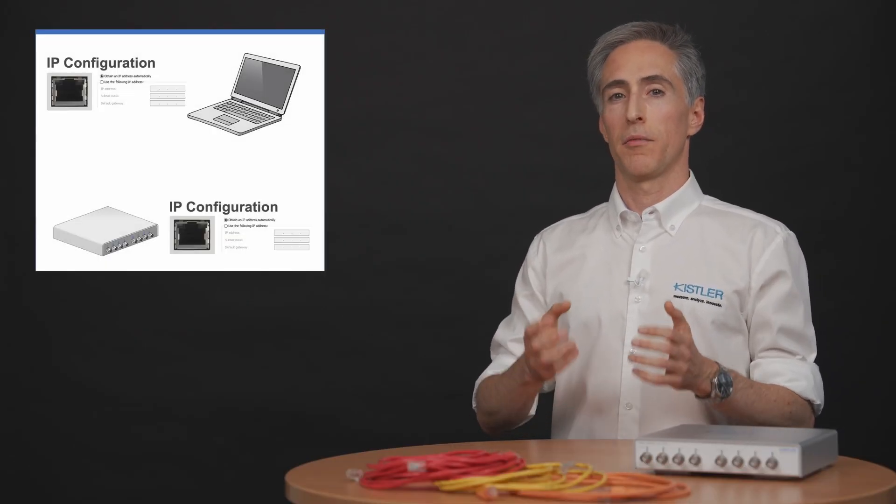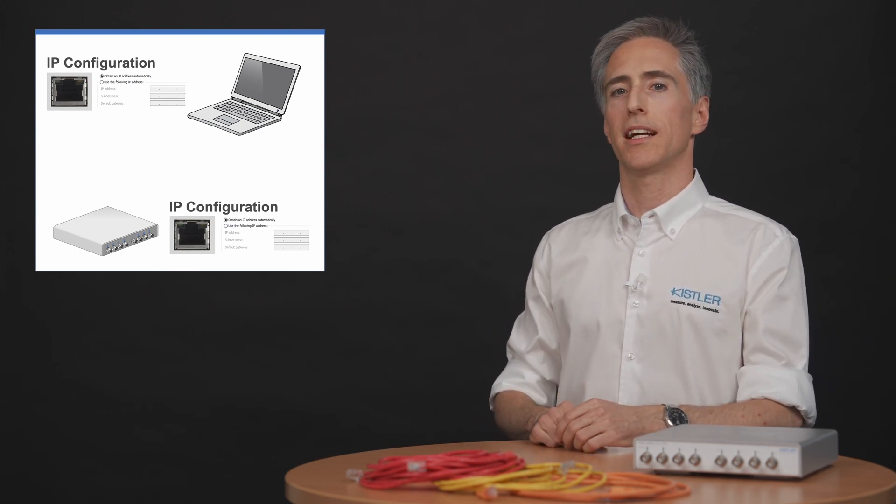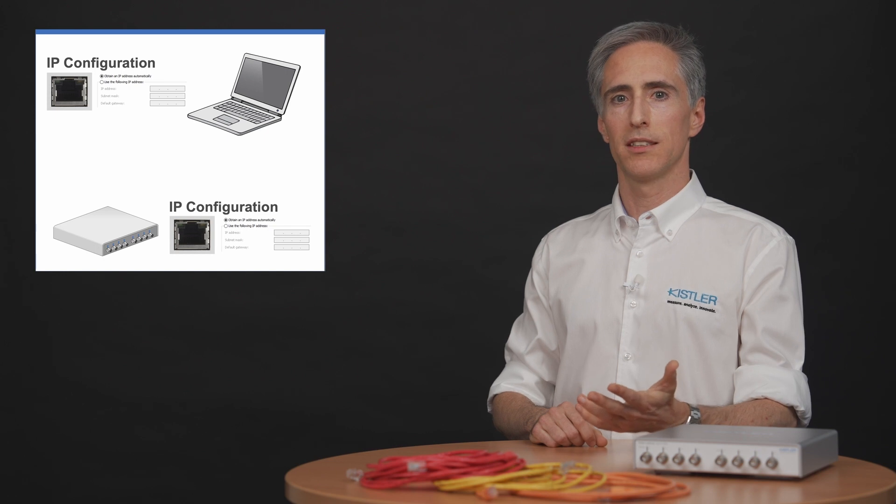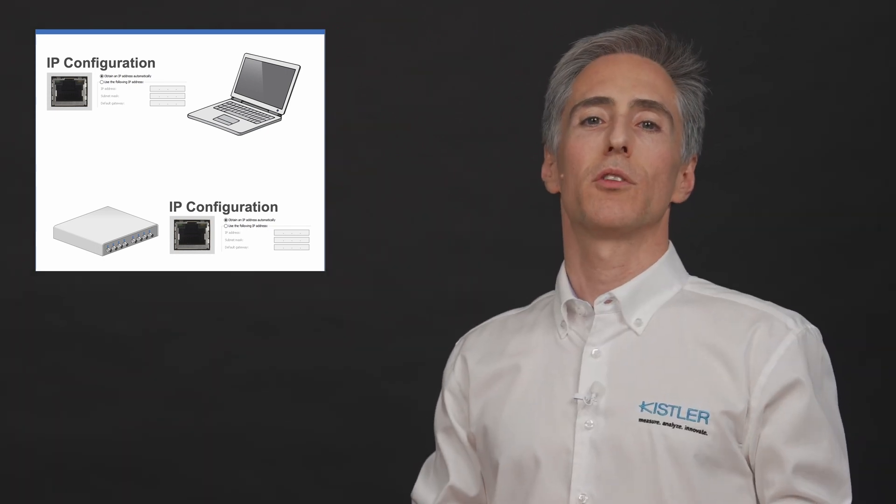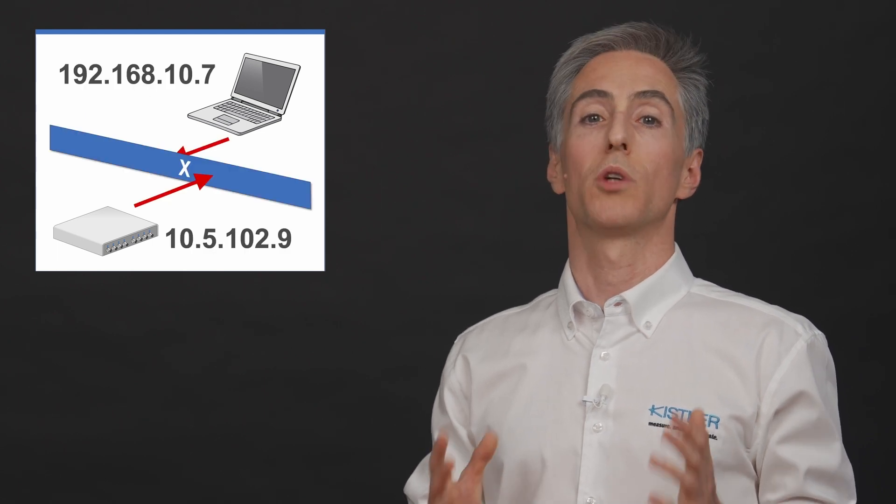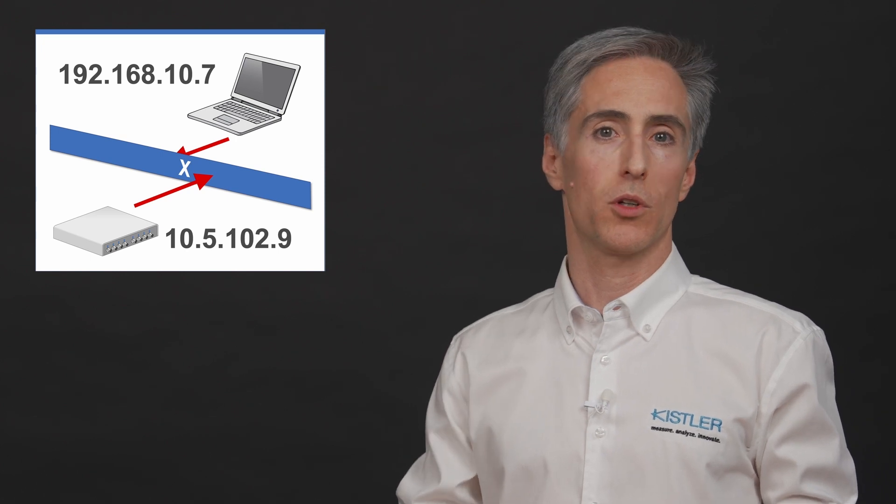As soon as you have an ethernet interface on the device, there is a configuration somewhere, and this configuration has an influence on which addresses you can reach and which not. If you connect the device to your computer but the address ranges don't match, you can't communicate, although you know the address of the device you want to talk to.